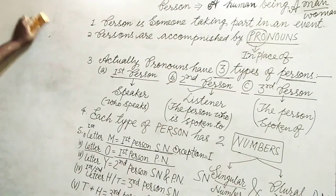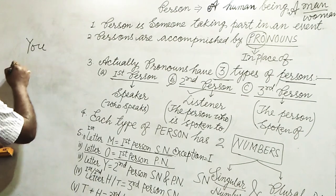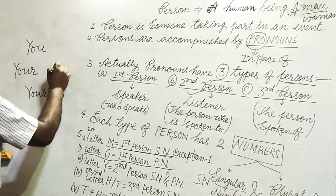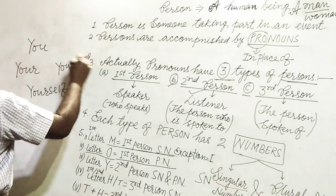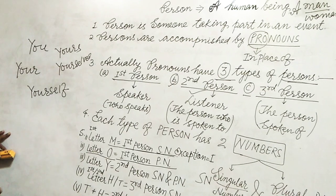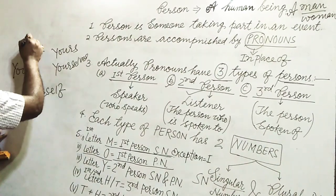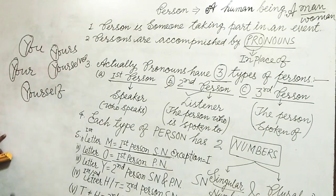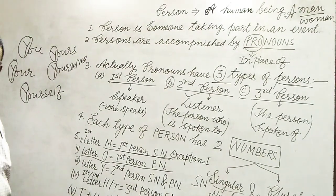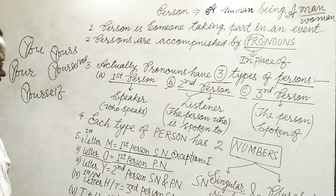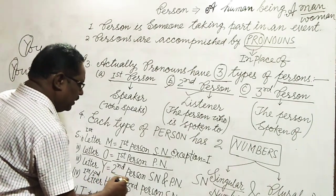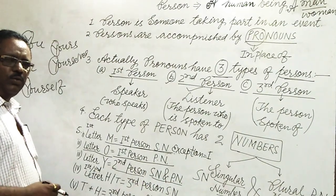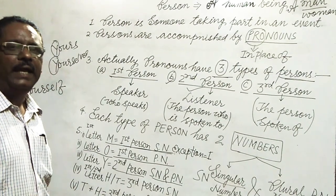I am writing: you, your, yourself, yourselves, and yours. In these pronouns, we see that Y letter comes first. When Y letter comes first in a pronoun, it denotes second person with both numbers — singular number and plural number. Y denotes second person singular number and plural number.